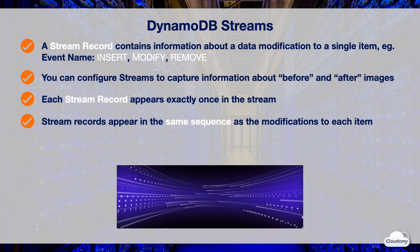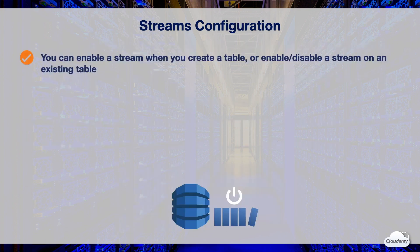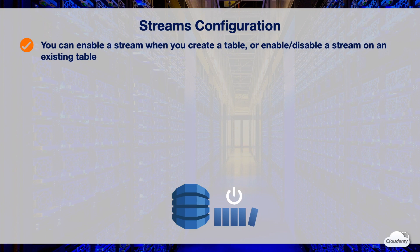Each stream record is encrypted at rest and stored for 24 hours in DynamoDB Streams. The data in the stream will continue to be readable for 24 hours and automatically removed after that. You can enable a stream when you create a new table, enable or disable a stream on an existing table, or change stream settings at any time. DynamoDB Streams operates asynchronously, so there is no performance impact on a table when you update a stream.